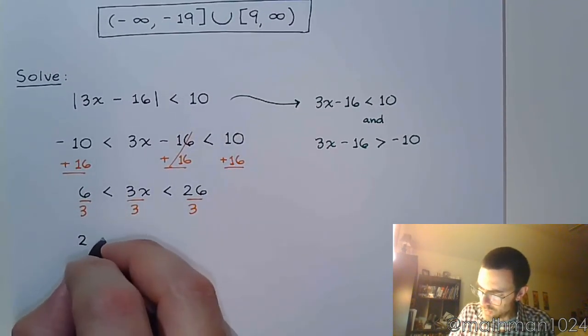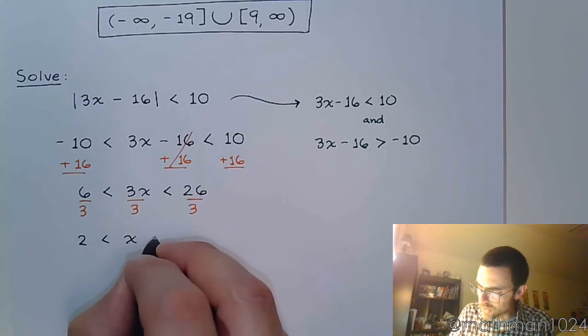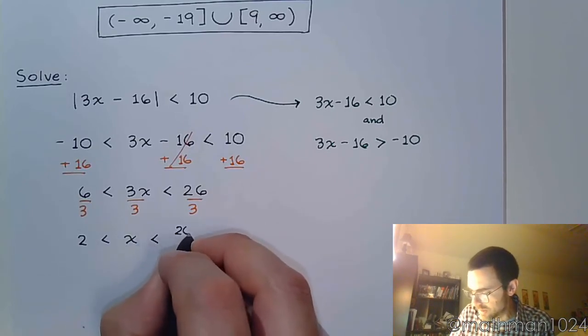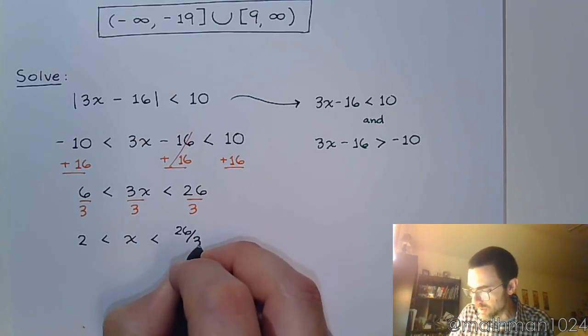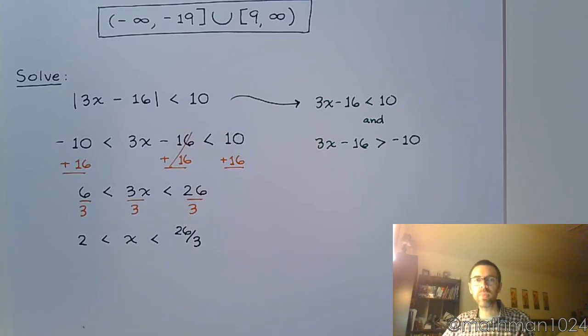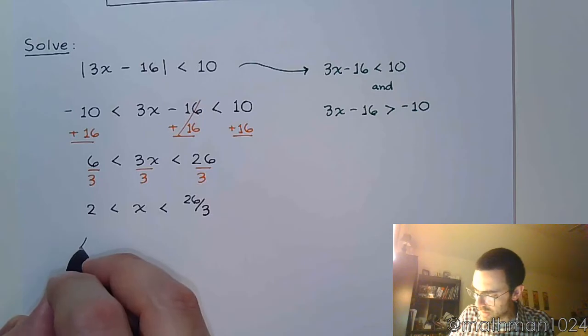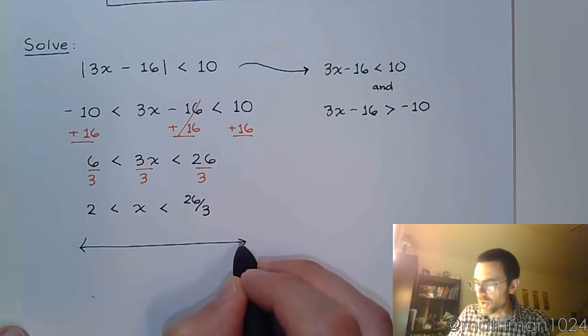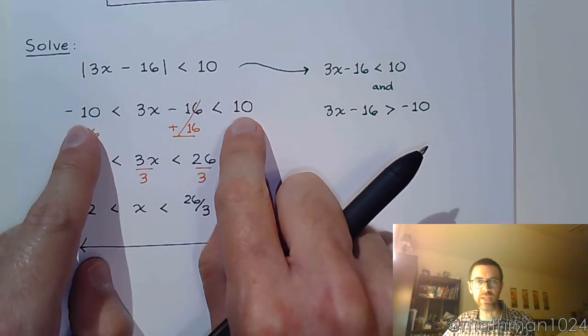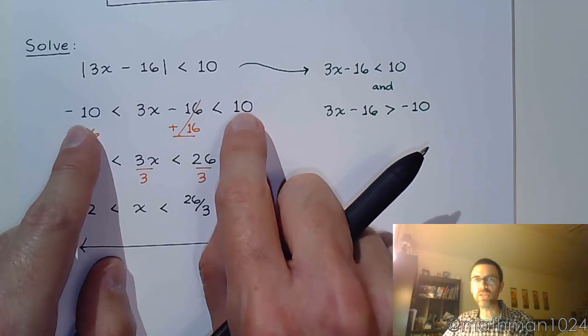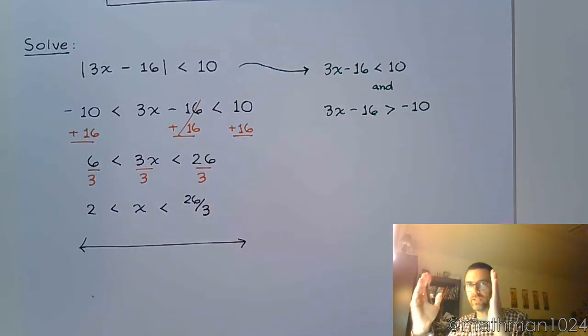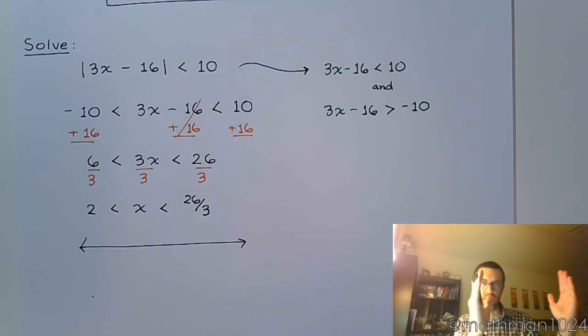We get 2 is less than x which is less than 26 over 3. We expected this to be just one section of the number line. We started off being bounded between negative 10 and 10. By adding 16 that shifts the section we're looking at, and then dividing by 3 shrinks that in.